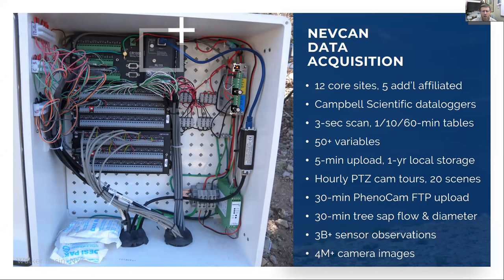We use Campbell Scientific data logger equipment and we operate on a three-second scan interval for most of the data loggers, so we're integrating over a very high time frequency. We run one-minute, 10-minute, and 60-minute tables that are compatible with different regional meteorological data standards that we share data out to. In some cases, we have over 50 variables on a site, depending on what we're trying to measure, and we're connected in real time — we basically ping the data loggers every five minutes and bring the data back.